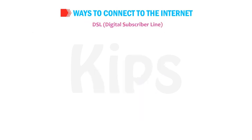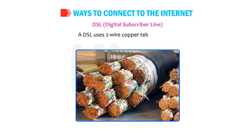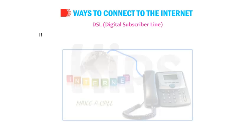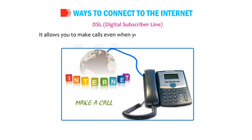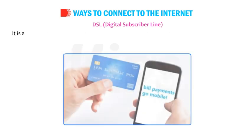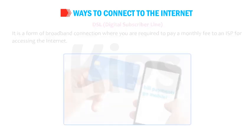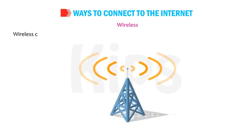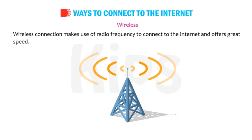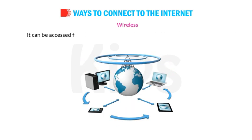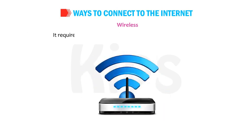DSL — Digital Subscriber Line — uses two-wire copper telephone lines. It allows you to make calls even when you are connected to the Internet. It is a form of broadband connection where you pay a monthly fee to an ISP for accessing the Internet. Wireless connection makes use of radio frequency to connect to the Internet and offers great speed. It can be accessed from any location within the network coverage area and requires a Wi-Fi modem connected to your computer.